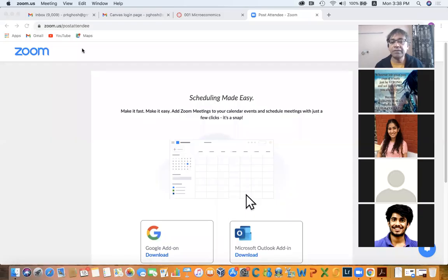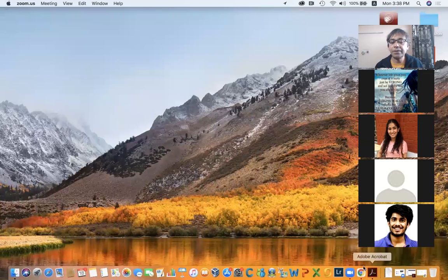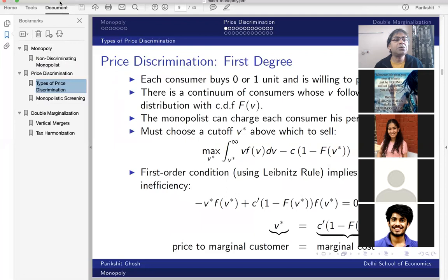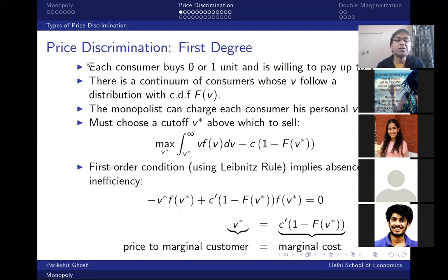Now I will talk about price discrimination in monopoly and the consequences of that. There are many different notions of price discrimination with rather silly names. First-degree price discrimination is price discrimination across consumers — a situation where the monopolist can charge different prices from different people.